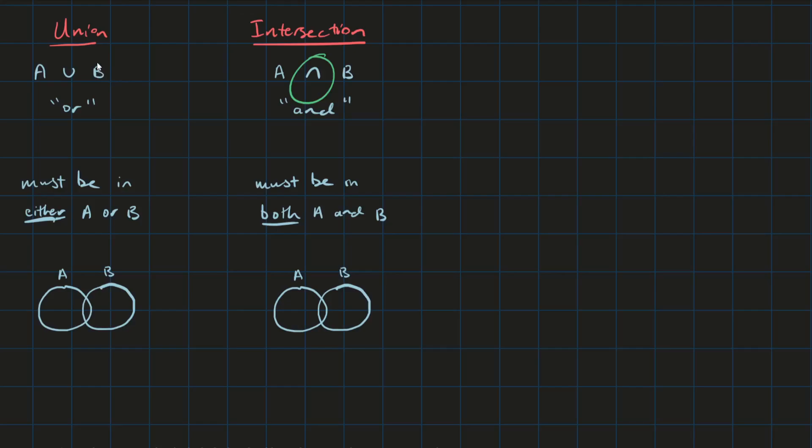Now the colloquial term for union is or, and the reason for that is because to be part of the union, an element must be in either A or B. So if this is represented in a Venn diagram, then the union is just whatever's in either one of those two events.